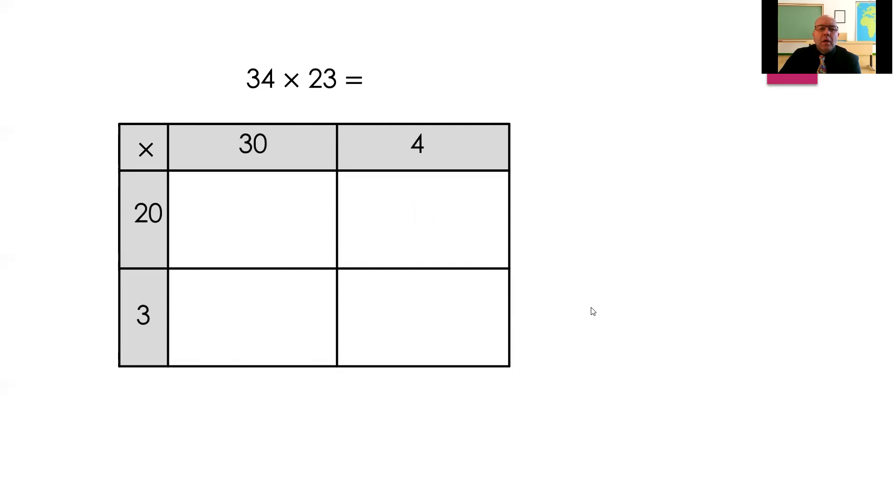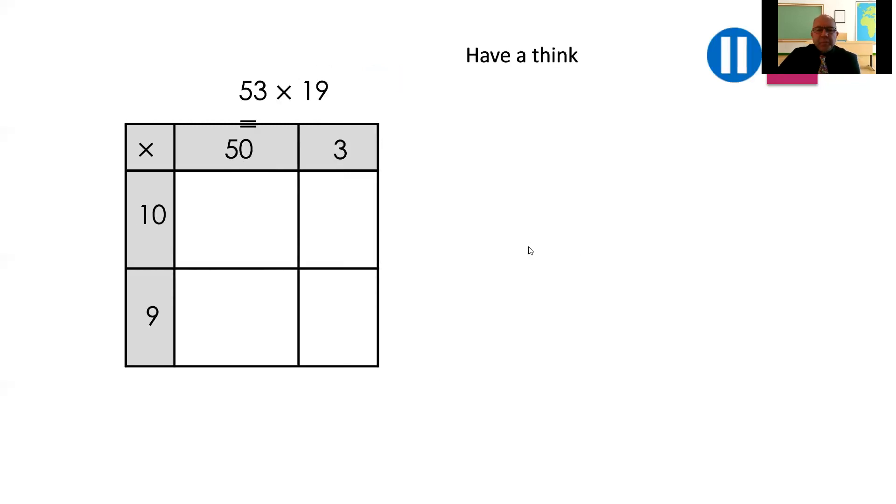34 times 23. Let's work it through again. 20 times 30 is 600. 20 times 4 is 80. 30 times 3, or 3 times 30, is 90. And 3 times 4 is 12. All together is 782. Right. Pause the video and have a think about this one. 53 times 19. Hopefully, you started with 10 times 50, which is 500. Then 10 times 3, 30. 9 times 50, which is 450. And 9 times 3 is 27. And when you added them all together, you would have got 1,007. Well done if you got that one.